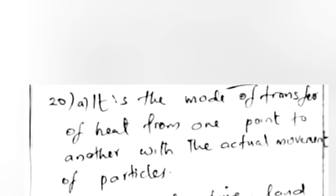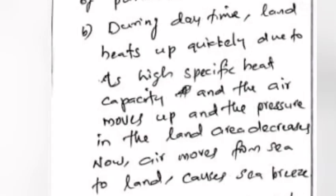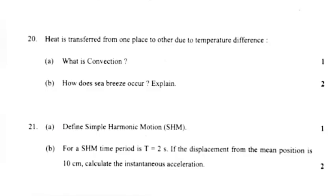Answer: Convection is the mode of transfer of heat from one point to another with the actual movement of particles. During daytime, land heats up quickly due to high specific heat capacity. Air moves up and pressure in the land area decreases. Air moves from sea to land, causing sea breeze.